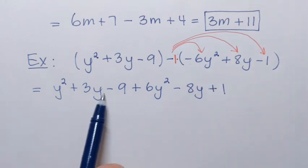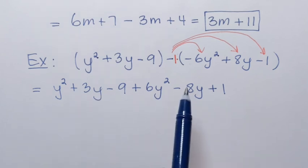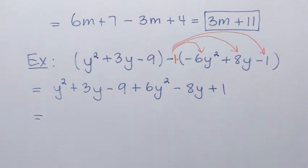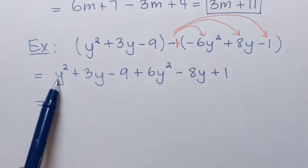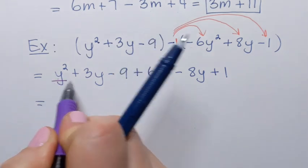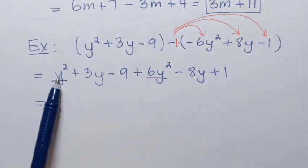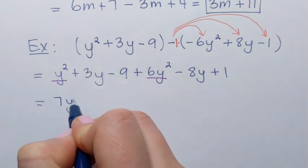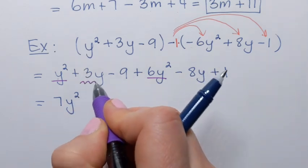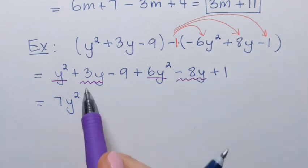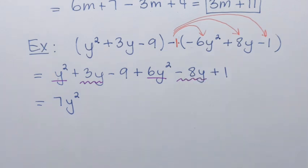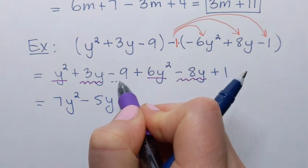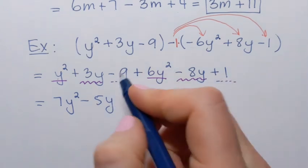When I clear the parentheses, I want to make sure all terms are separated by pluses and minuses. After that, we combine like terms. y squared plus 6y squared: remember, y squared is the same as 1y squared, so 1 plus 6 is 7y squared. Next, 3y and negative 8y: 3 minus 8 is negative 5, so minus 5y. And finally, negative 9 plus 1 is negative 8. So the answer is 7y squared minus 5y minus 8.